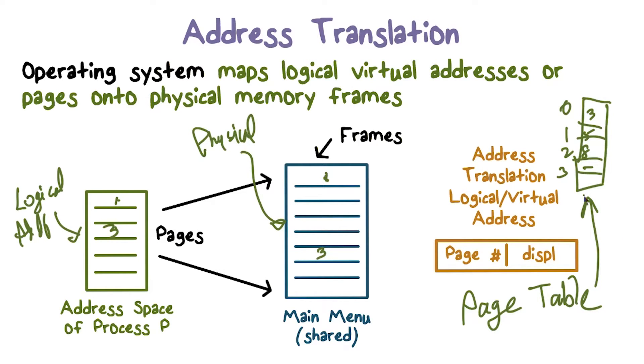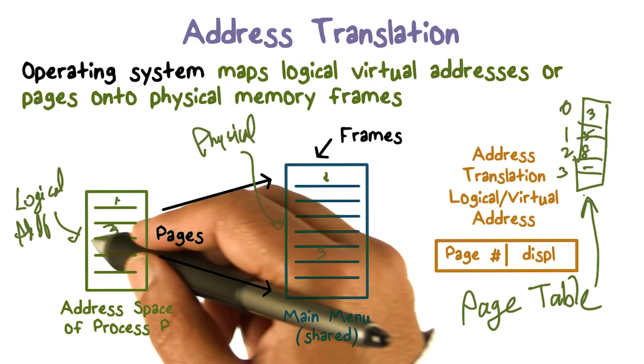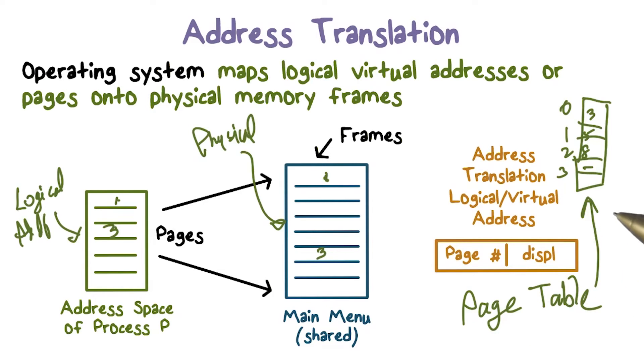So this is a page table that actually we build, and the operating system is responsible for actually building this and protecting this. So remember, at this point, the flow that we should understand is really important. A process may be executing in user space, generates an address saying I need to fetch the next instruction. That's where my instruction pointer, program counter points, or an operand, or whatever it is. And I need to access this memory location. It starts with a logical address. The system now says where exactly is this information that the process needs? We need to locate the physical address to which this logical address maps.